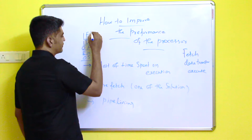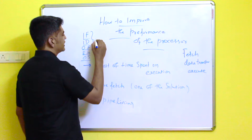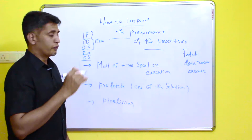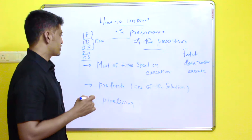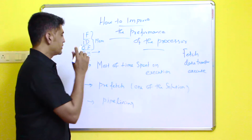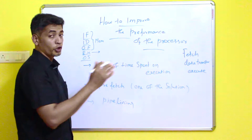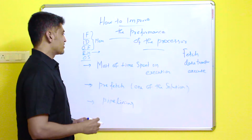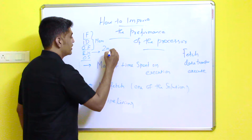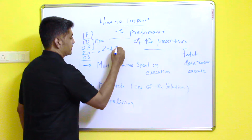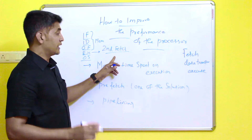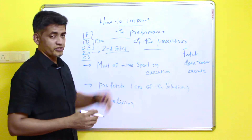During the first three stages, memory access may be required for instruction execution. But in the fourth stage, execution may not require main memory access. At that time, you can go for the second instruction fetch. This is how you can improve the performance of the processor.